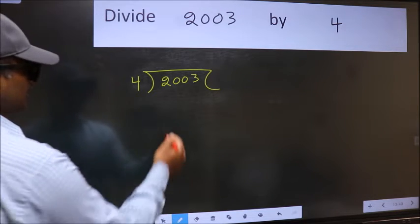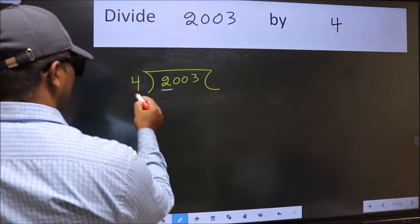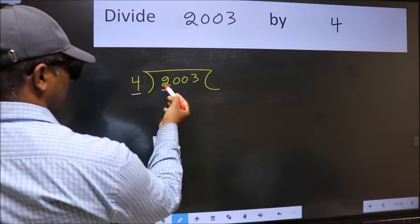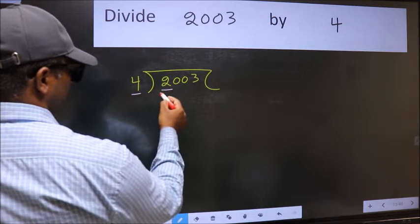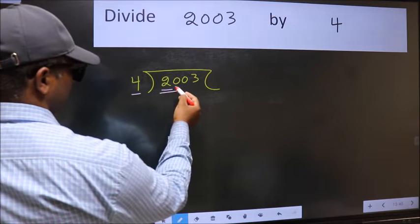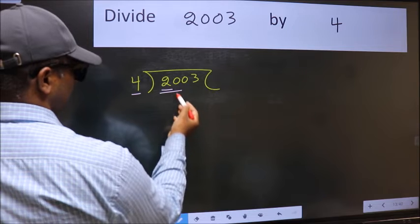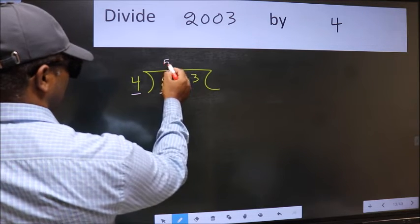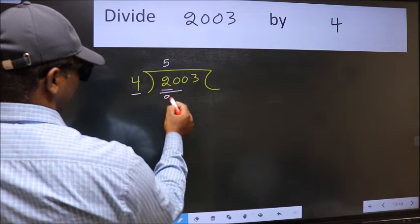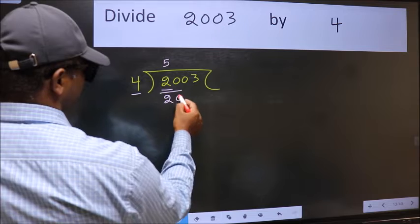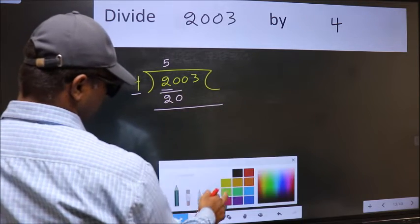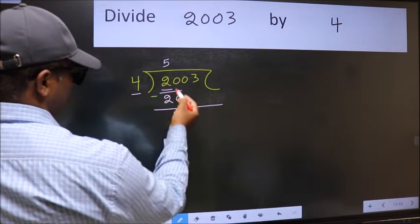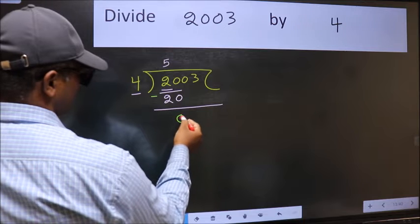Here we have 2 and here 4. 2 is smaller than 4, so we should take 2 numbers: 20. When do we get 20 in the 4 table? 4 fives are 20. Now we should subtract: 20 minus 20 is 0.